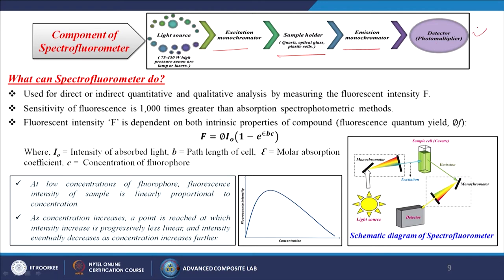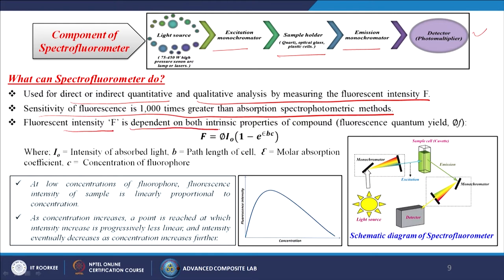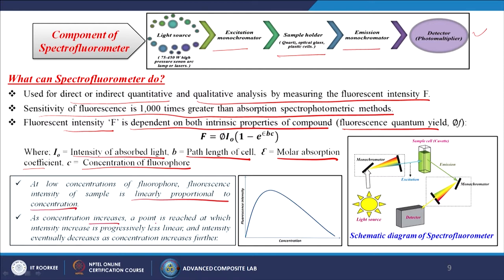A spectrofluorometer is used for direct or indirect quantitative and qualitative analysis by measuring the fluorescent intensity F. Sensitivity of fluorescence is 1000 times greater than absorption spectrophotometric methods. Fluorescent intensity F depends on both intrinsic properties of the compound — fluorescence quantum yield φF — and: F = φ·I₀·(1 - e^(-ε·B·C)), where I₀ is the intensity of absorbed light, B is the path length of cell, ε is the molar absorption coefficient, and C is the concentration of fluorophore. At low concentration fluorescence intensity is linearly proportional to concentration. As concentration increases, the intensity increase becomes progressively less linear and eventually decreases.